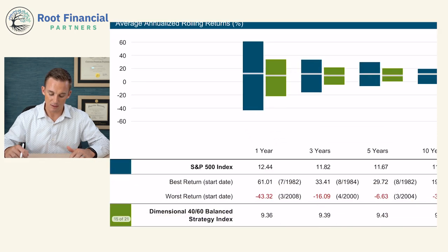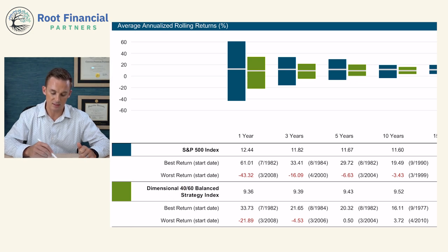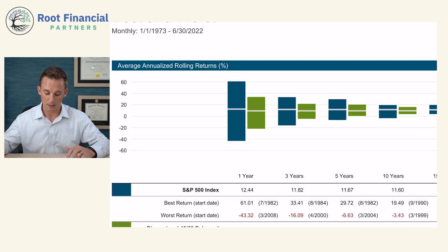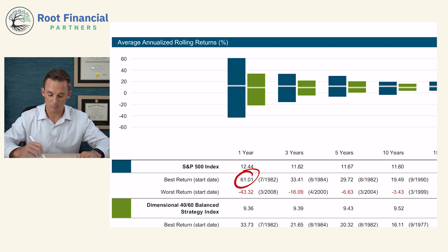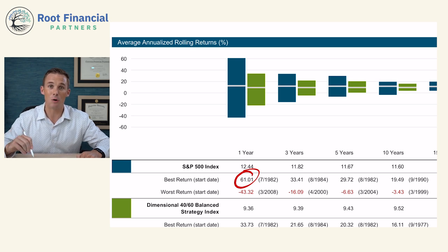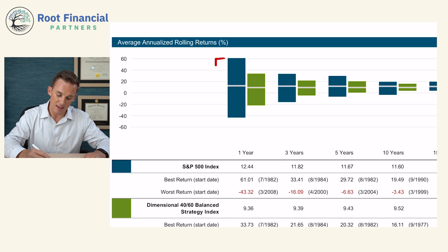Let's take a look at a couple of different investments. This chart is from Dimensional Funds, and it's showing us the S&P 500 versus a balanced strategy of 40% stocks and 60% bonds, going all the way back to 1973. When we look at the short term, the range of potential returns you can expect from the S&P 500 is very significant. There have been years as high as 61% — investing a dollar in July of 1982 would have returned 61 cents over the next 12 months. But there have also been very bad returns, like negative 43% had you invested in March of 2008. So the range of potential one-year returns here is very large.